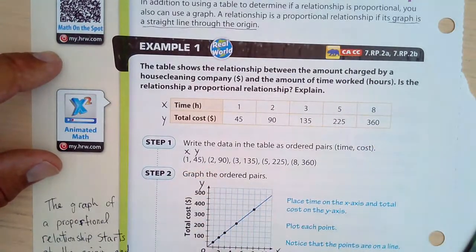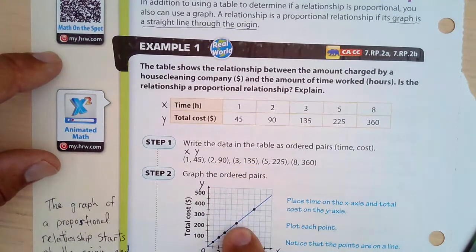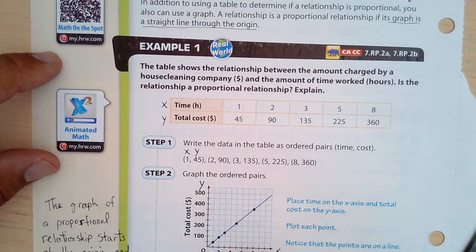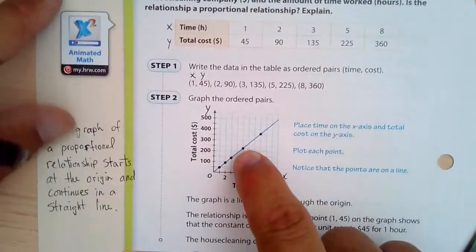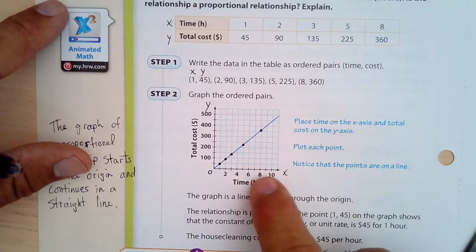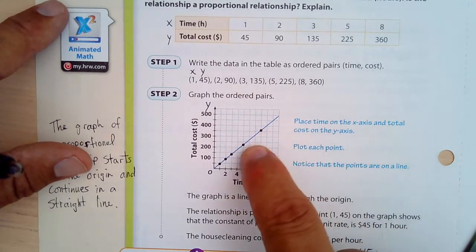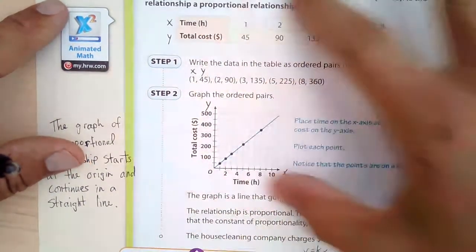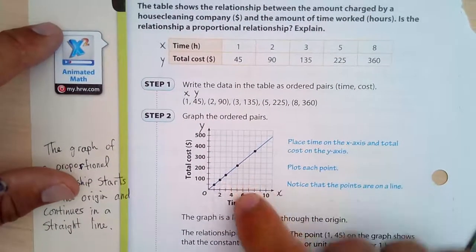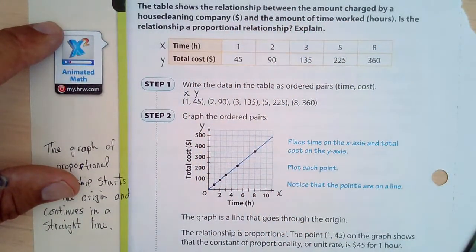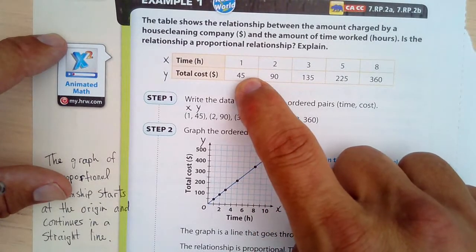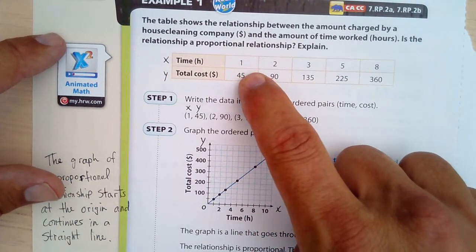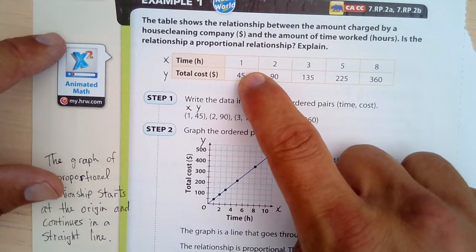And then 1 and 45 is there, 2 and 90 here, 3 and 135, 5 and 225 is here, and 8 and 360 is that dot right there. So does it make a straight line? Yeah. When you connect these, will that line go through the origin? Yes. This is a proportional relationship. So this graphically shows us that the entire relationship is proportional. Also, the unit rate is 45, also known as the constant of proportionality. That's the rate of change. The rate of charge is $45 per hour. And when we're writing an equation, y equals kx, our equation would then be y equals 45x. So you notice that rate of change, constant of proportionality, all the same thing.